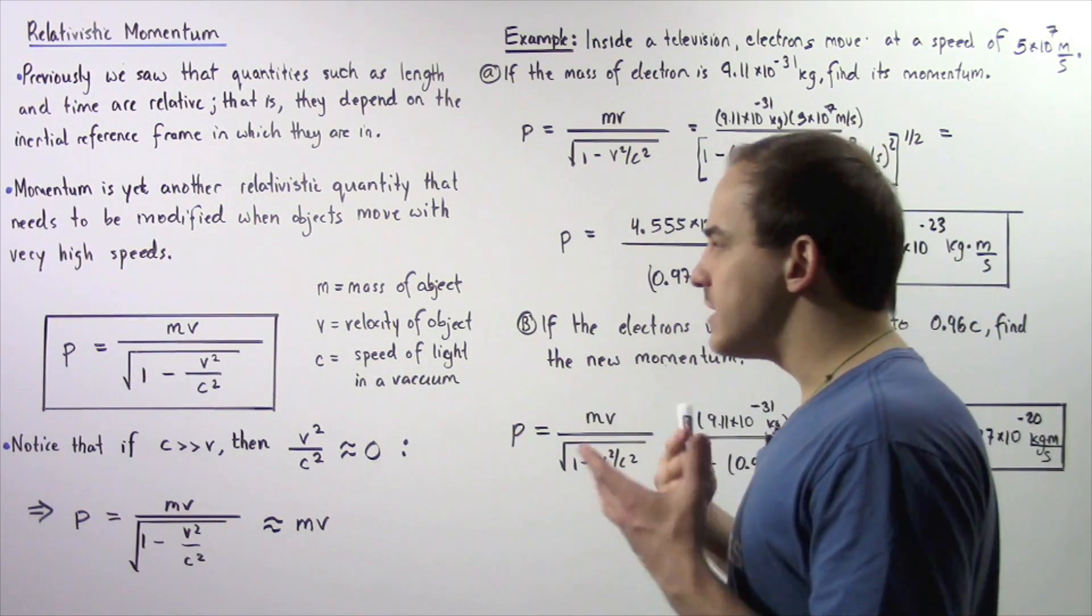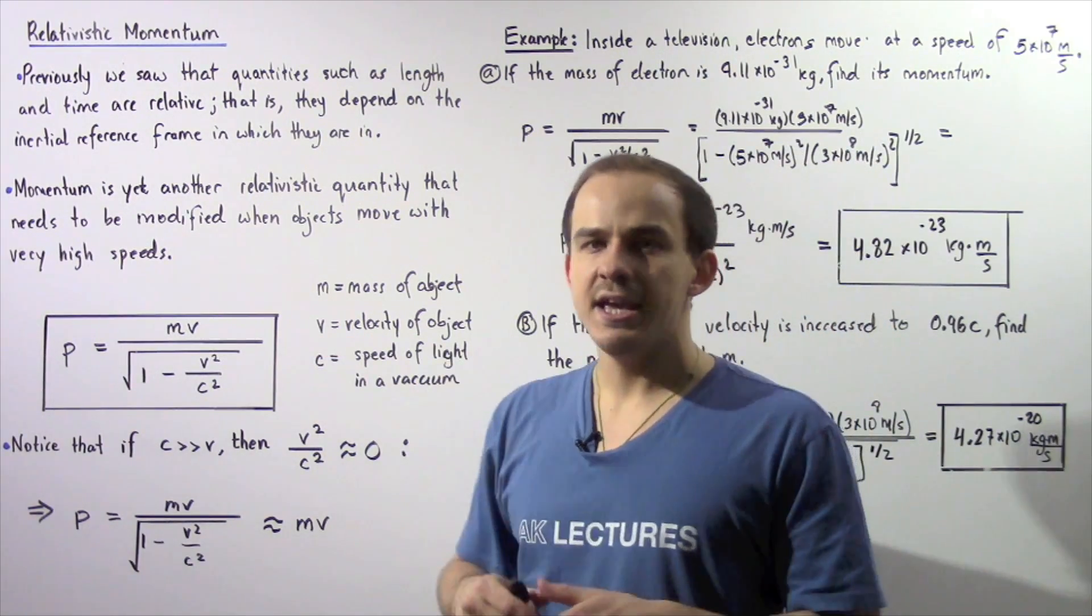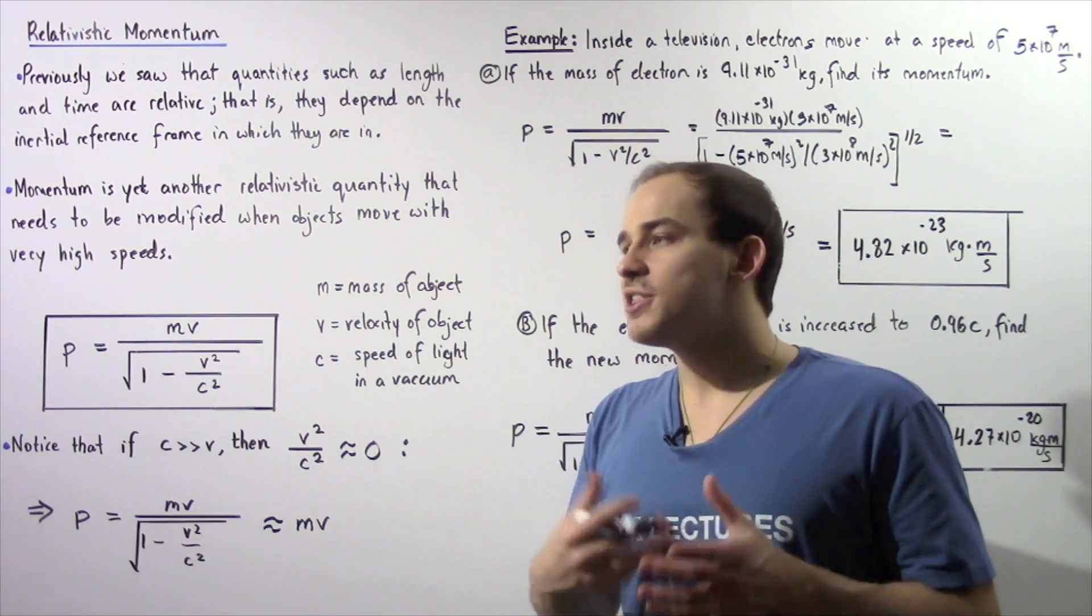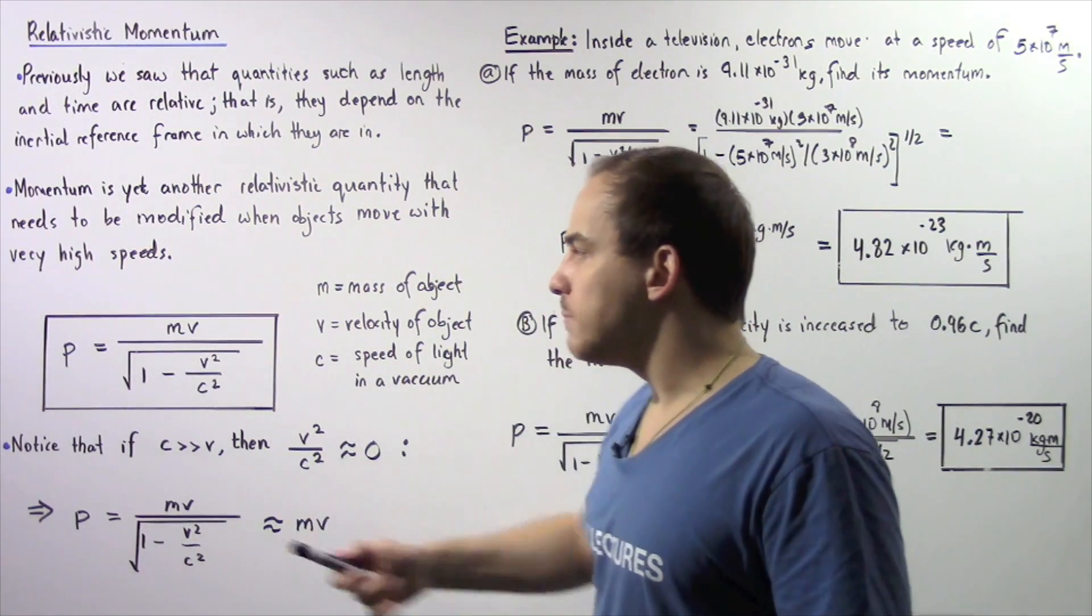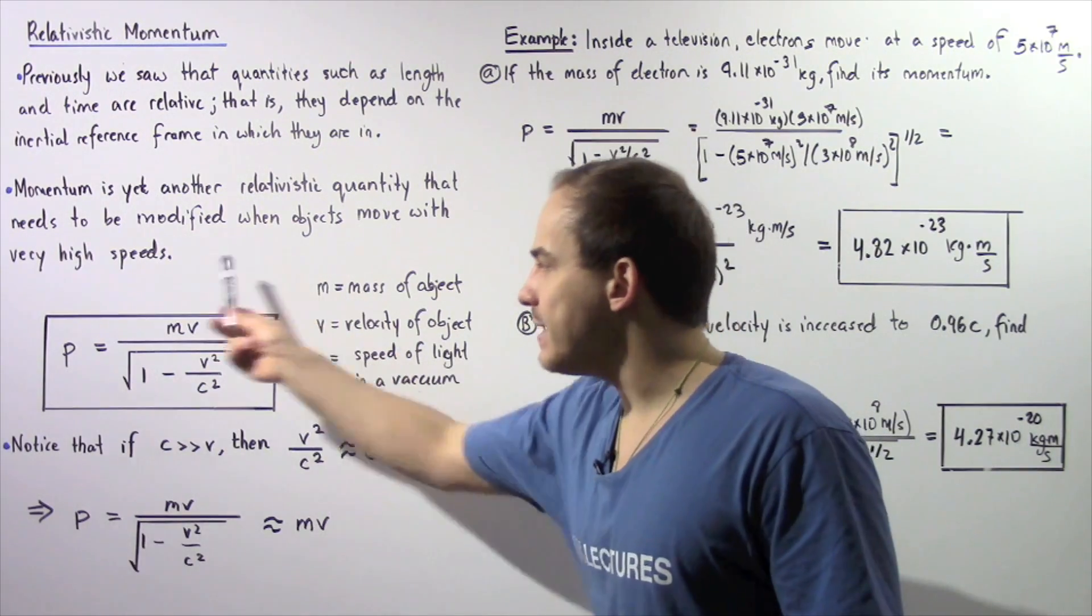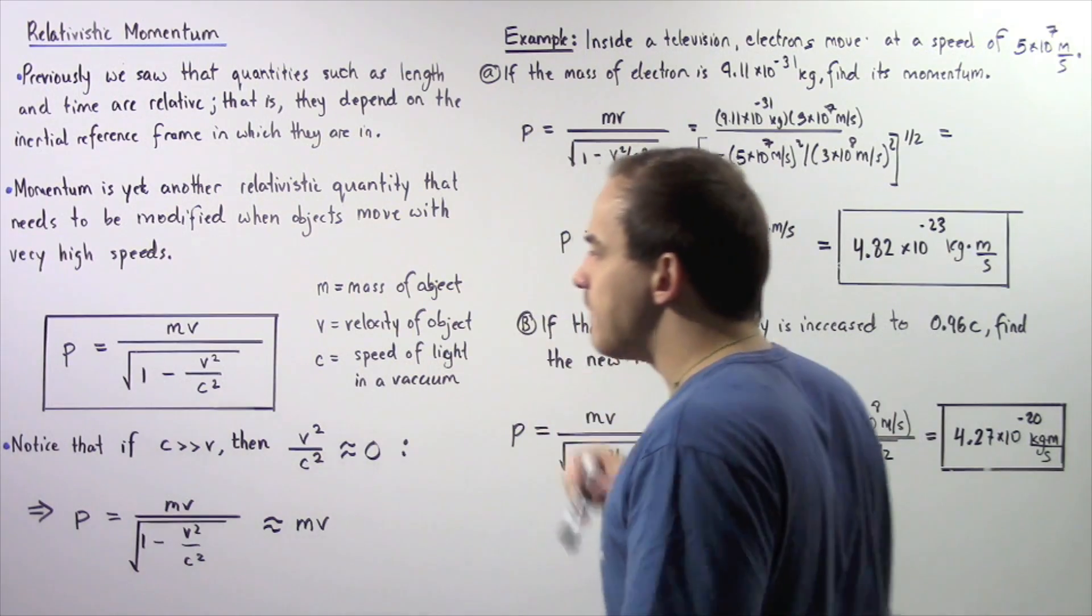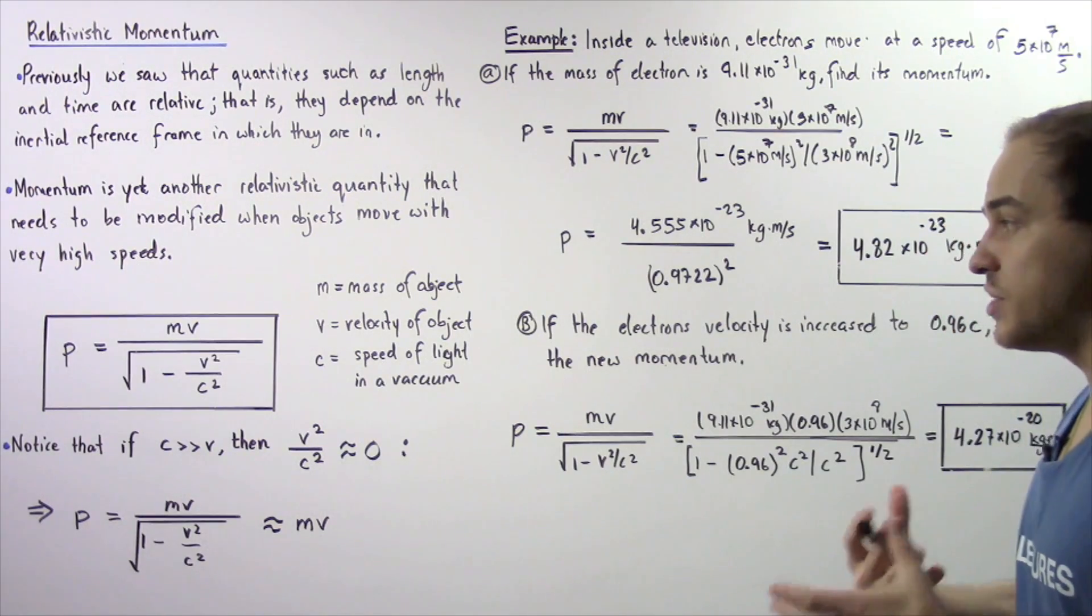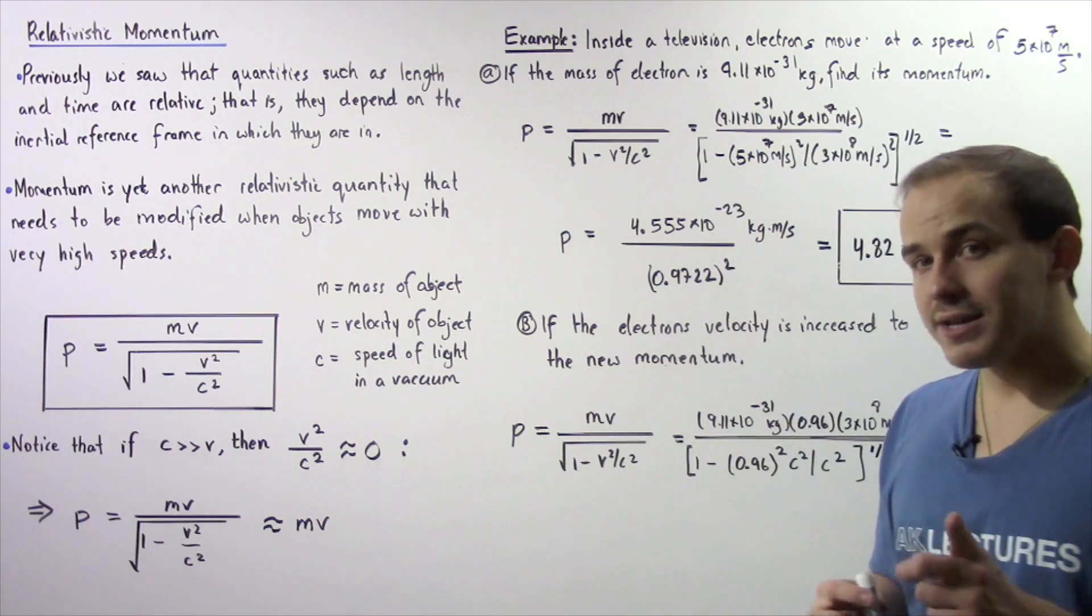Let's suppose we have an object with a mass m that is traveling with a very high velocity v, and c is the speed of light in a vacuum. Because the object has a very high velocity, the momentum of that object given by p, which is also known as the relativistic momentum, is given by the following equation: m times v divided by the square root of 1 minus v squared divided by c squared. This is known as the relativistic momentum equation.